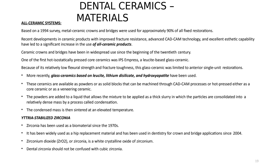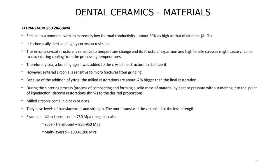Yttria-stabilized zirconia: yttria acts as a filler or binder. Zirconia itself consists of very small particles held together with this bonding agent. When milling zirconia, it is milled approximately 25% larger than the designed restoration size, because during the sintering process — where zirconia is placed in an oven to mature — the yttria filler disappears, and zirconia particle bonding takes place. When removed from the sintering oven, the crown has shrunk to the correct size.